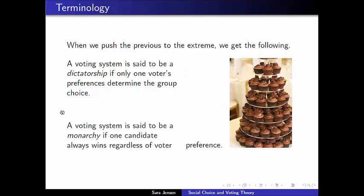On the other hand, we can have a voting system that pushes neutrality to the extreme, and that voting system would be a monarchy. A monarchy is a social choice system where one candidate always wins, regardless of all voter preference. One example — a silly one that doesn't come from voting — would be imagining a wedding where people tell the caterers their preference for a vanilla cupcake or a chocolate cupcake. Every single person in that room can vote vanilla if they want, but if the chocolate cupcakes are all that's available in the back, that's all anybody is getting.